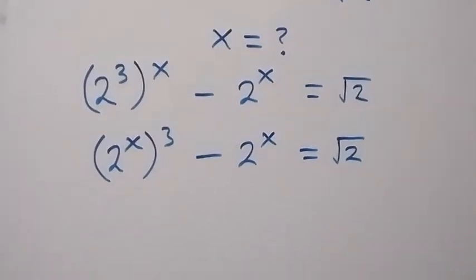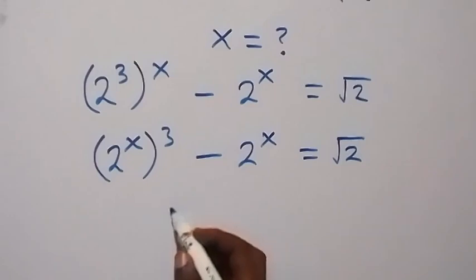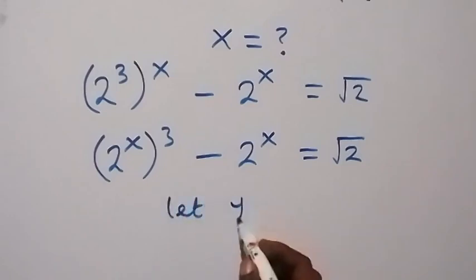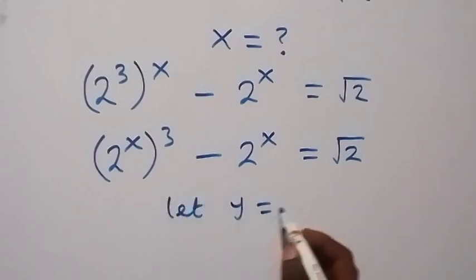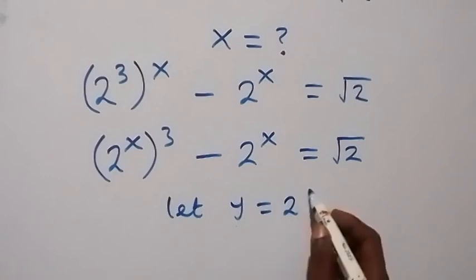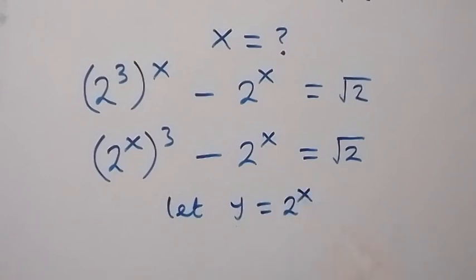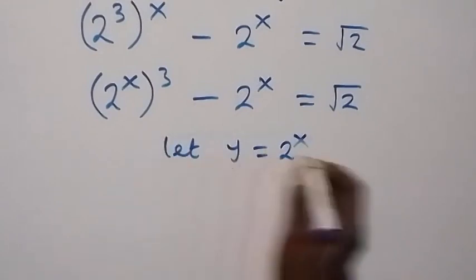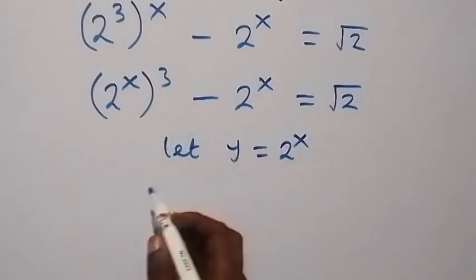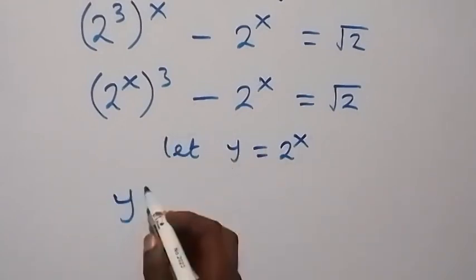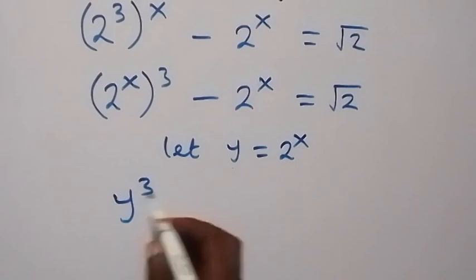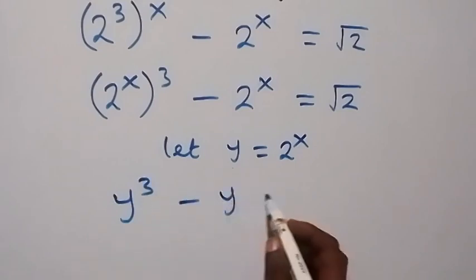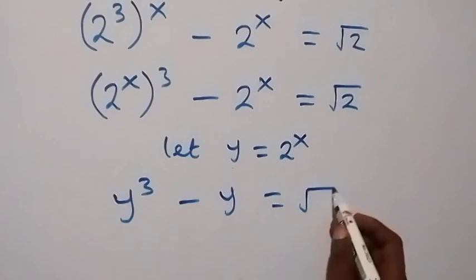We have 2 raised to power x common, so let a letter — let y be equal to 2 raised to power x. Then from here, we can write this again in terms of y, and we have y raised to power 3, then minus y equals to root 2.